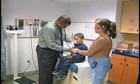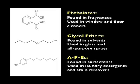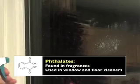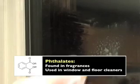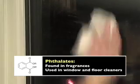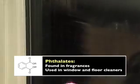The other three chemicals — phthalates, glycol ethers, and alkyl phenyl ethoxylates, or APEs — are linked to reproductive harm. Phthalates are chemicals found in fragrances and are used in floor polish and window cleaners. Exposure to phthalates has been linked to lowered sperm counts and developmental problems in baby boys.